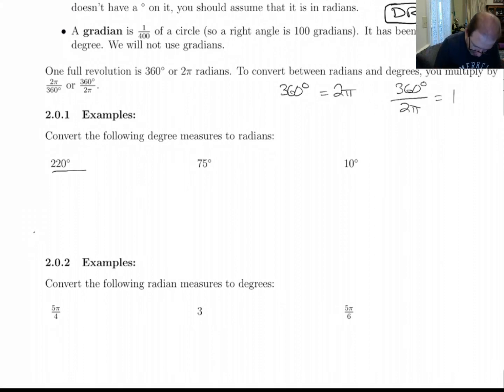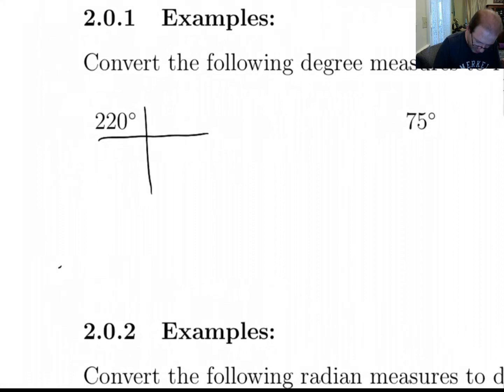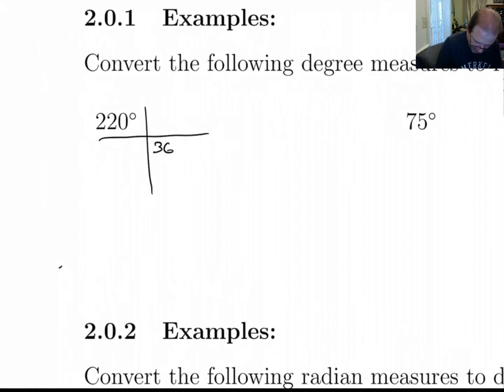So for 220 degrees, to convert that to radians, we just multiply by 360 on the bottom and 2π on top. Now I'm going to do that with my calculator. 220 times 2 divided by 360. I didn't put the π in there because that way I can get my calculator to tell me that this is 11/9. That's 11π/9.